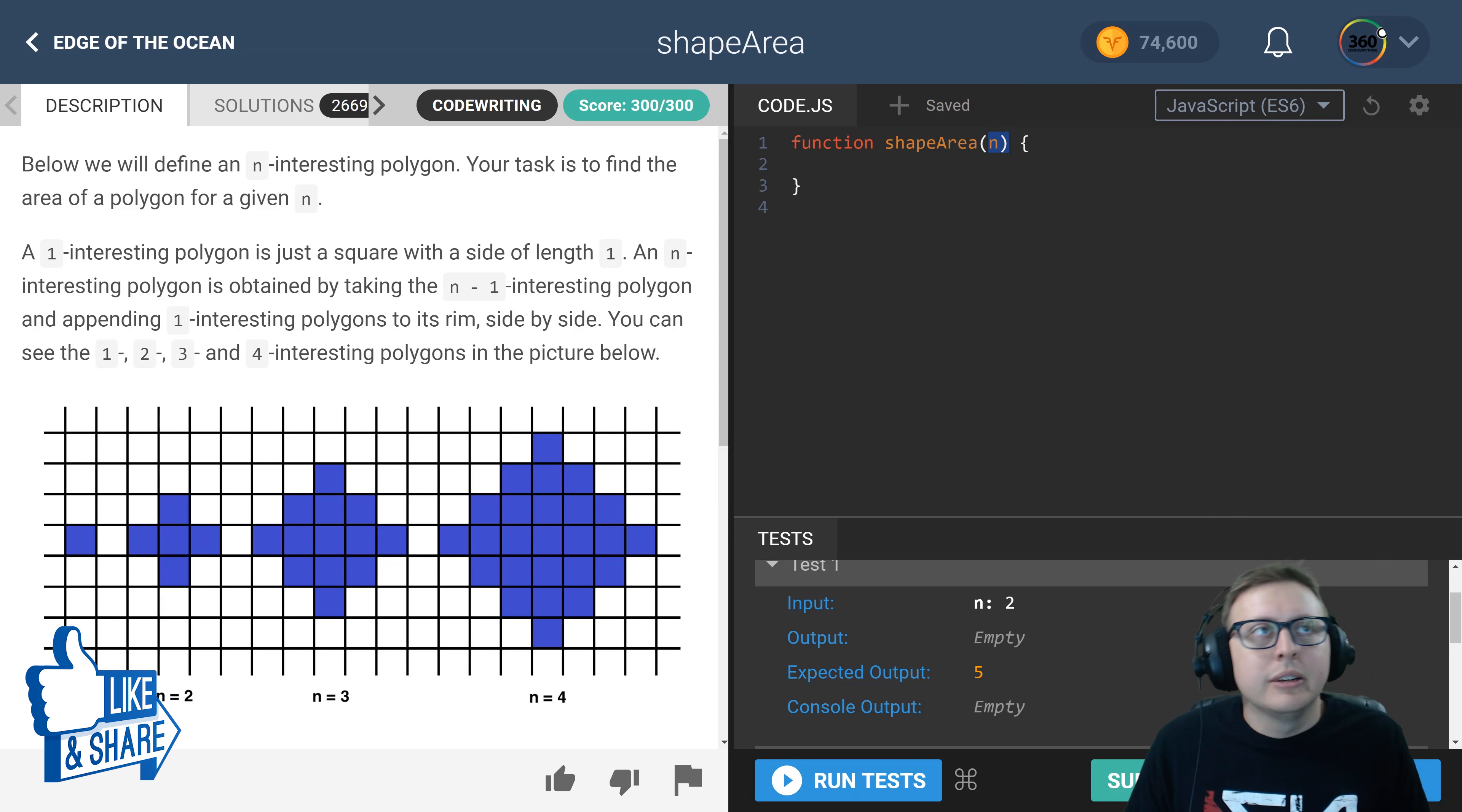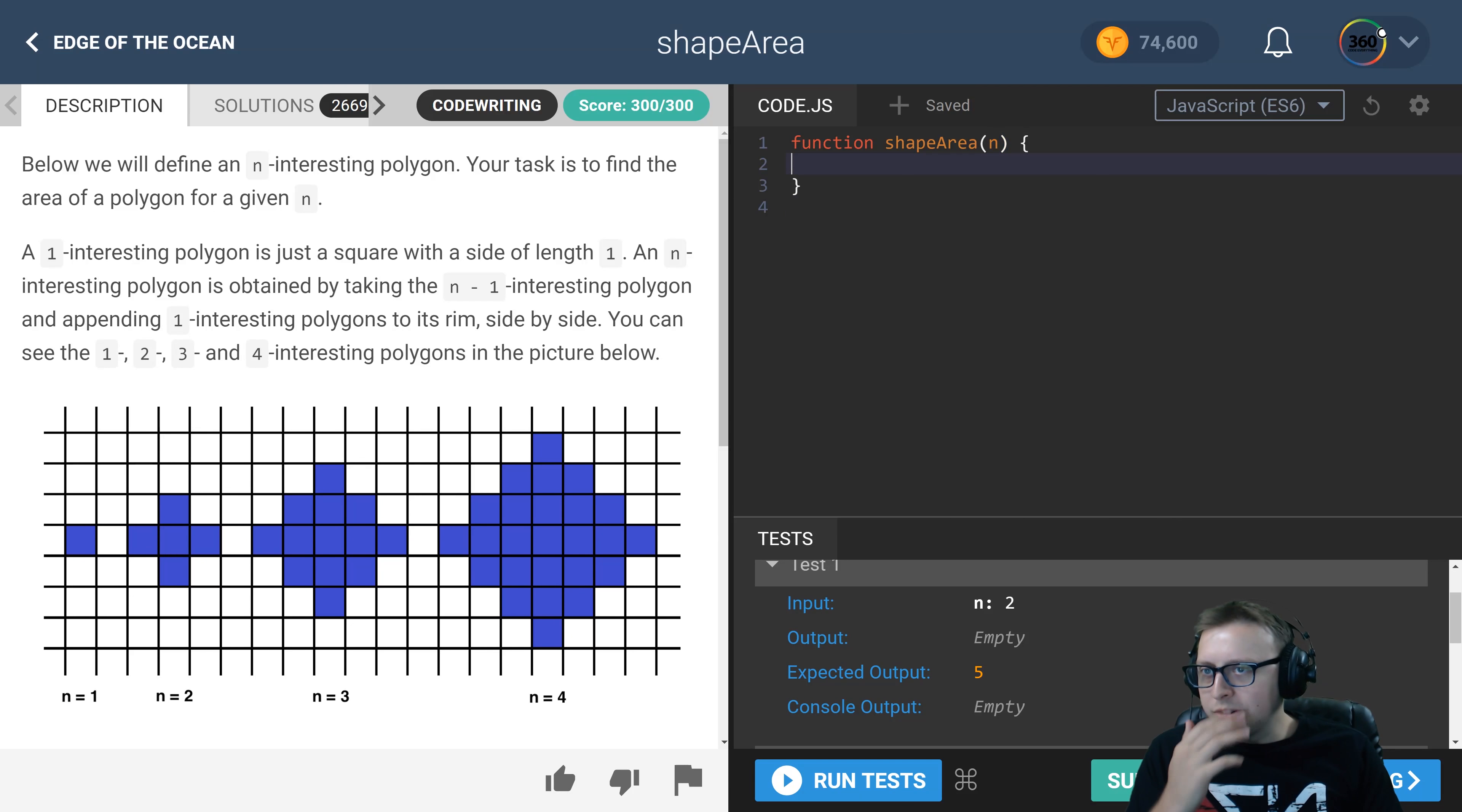Now there's a couple different ways we can do this. Now that we've discussed sort of the prepping, the way that I solved this is like so: we have a var and we set the area to initial one.